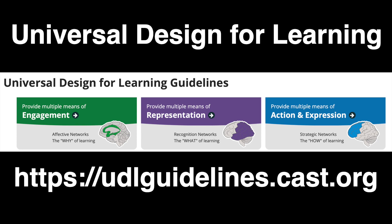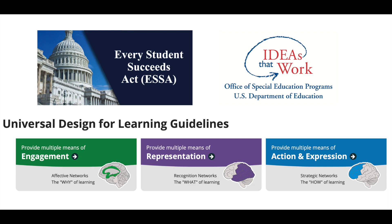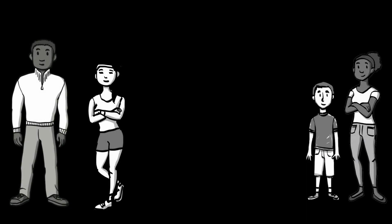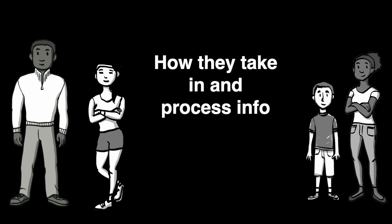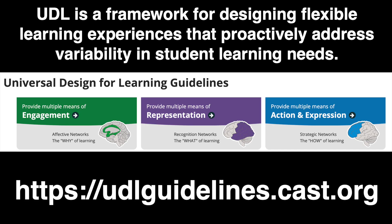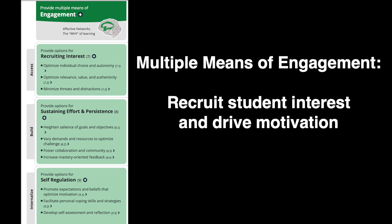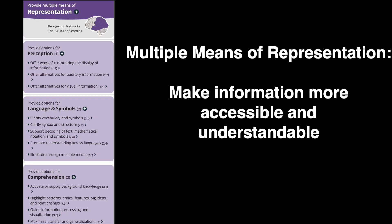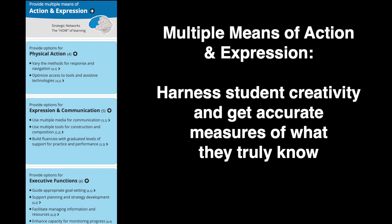Universal Design for Learning: We conclude Part 2 with a brief introduction to Universal Design for Learning, or UDL. The Every Student Succeeds Act points to UDL as a scientifically valid framework for guiding educational practice. Research in the learning sciences has revealed that learners vary in what they find motivating — the why of learning — how they take in and process information, the what of learning, and how they are able to respond and demonstrate their learning, the how of learning. Pioneered at CAST, UDL is a framework for designing flexible learning experiences that proactively address this variability by providing learners with options: multiple means of engagement to recruit their interest and drive motivation, multiple means of representation to make information more accessible and understandable, and multiple means of action and expression to harness creativity and get a more accurate measure of what students truly know.